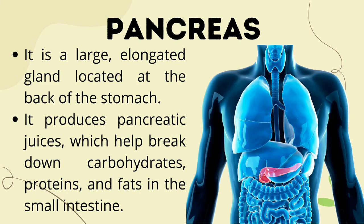Next is the pancreas — it is a large elongated gland located at the back of the stomach. It produces pancreatic juices that help break down carbohydrates, proteins, and fats in the small intestine. These juices are very important because they are needed to break down the essential substances our body requires. That is the main function of the pancreas, and those are the different accessory organs of the digestive system.